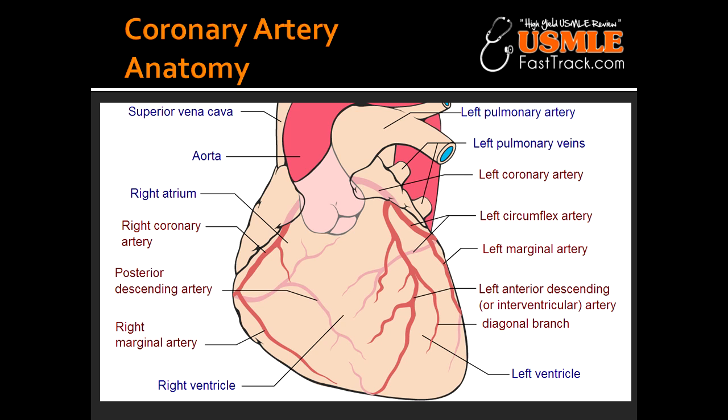What regions of the heart are supplied by the left circumflex coronary artery, also known as the LCX? The left circumflex coronary artery supplies the lateral and posterior walls of the left ventricle. Basically, the posterior left ventricle is supplied by the left circumflex coronary artery.